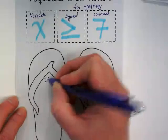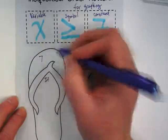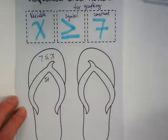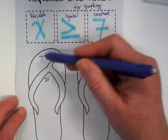So if, let's say you have 7 is less than or equal to X, is the variable on the left there or the right? We want it on the left.